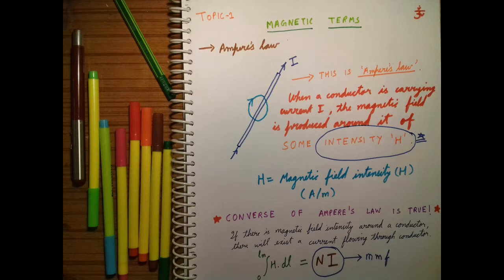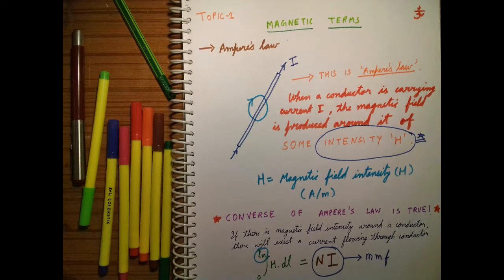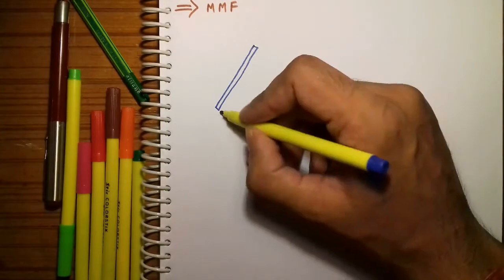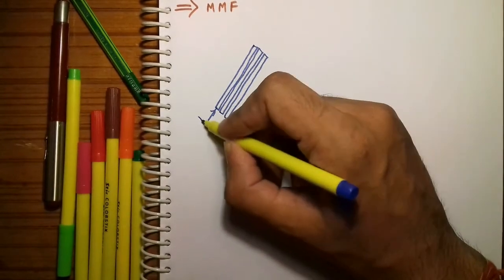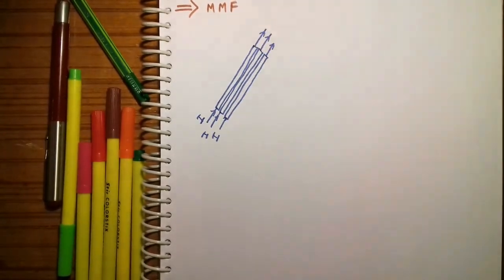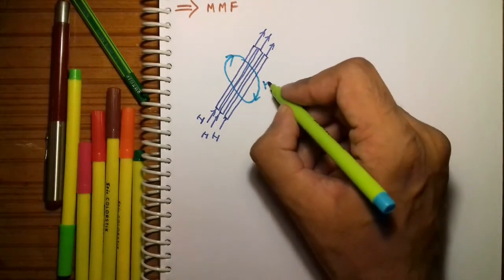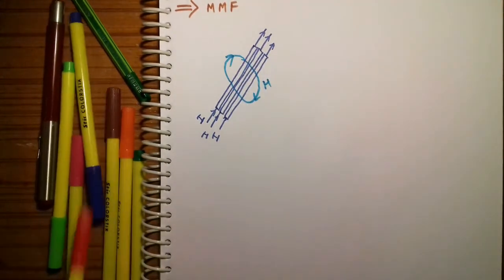The mathematical expression is as shown on the screen. This introduces us to the new term MMF. This is the most important term: Ni, where N is the number of turns and I is the current flowing through the conductor. LM is the path length. Now let's see in detail about MMF — Magnetomotive Force. If we have N conductors each carrying a current I, then some magnetic field intensity is produced around each conductor, denoted by H, as stated by Ampere's law.